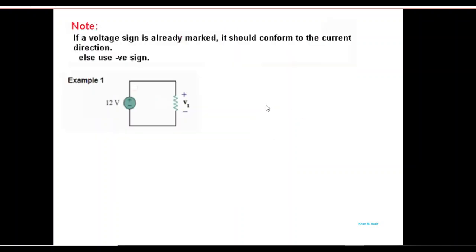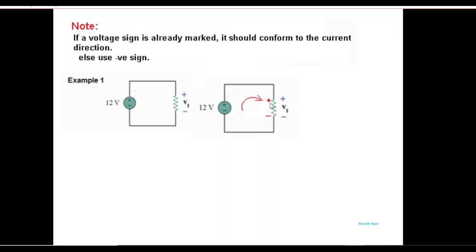An important point about marking polarity: if the polarity is already marked, you have to verify whether it follows this sign convention. In this case, we draw the current direction and, since wherever the current touches first is positive, we mark it positive and the other end negative. Our marking matches the marking in the question, therefore the voltage is written directly, and since there is no other drop, this voltage will be 12 volts, so V1 is written as 12 volts.